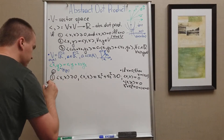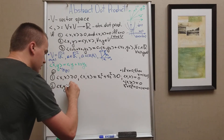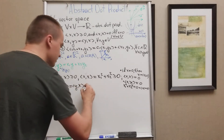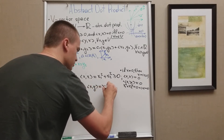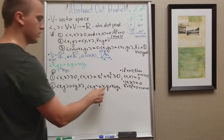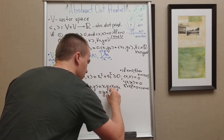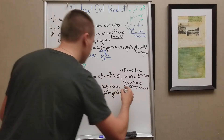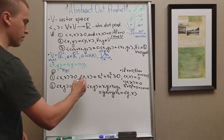What about the second axiom? I want to show that x · y equals y · x for any x and y. Indeed, x · y = x₁y₁ + x₂y₂, and since real numbers are commutative, this equals y₁x₁ + y₂x₂, which is exactly y · x. Second property: check.